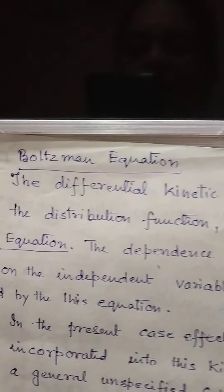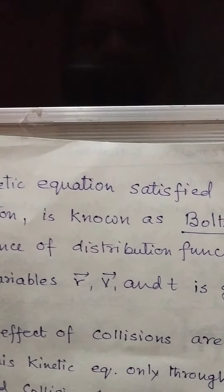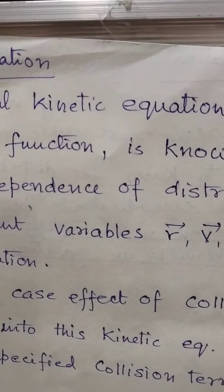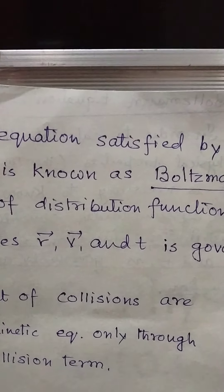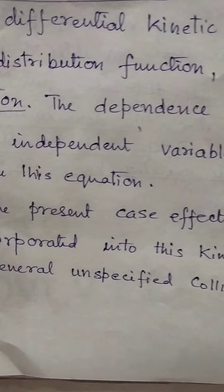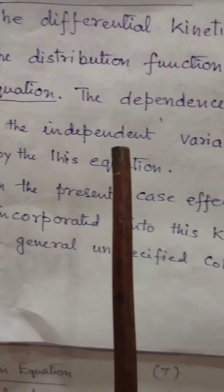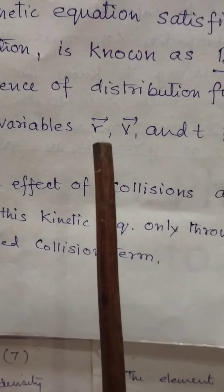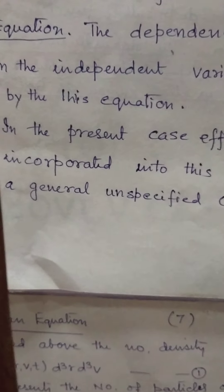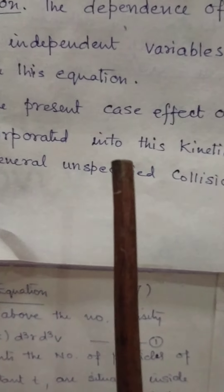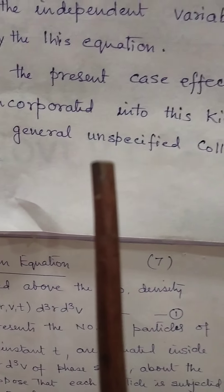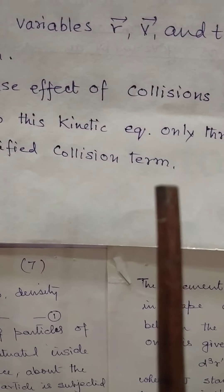The differential kinetic equation satisfied by the distribution function is known as the Boltzmann Equation. The dependence of the distribution function on the independent variables R, V, and T is governed by this equation. In the present case, the effect of collisions are incorporated into this kinetic equation only through a general unspecified collision term.